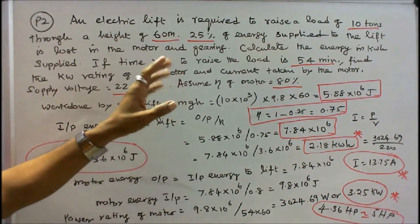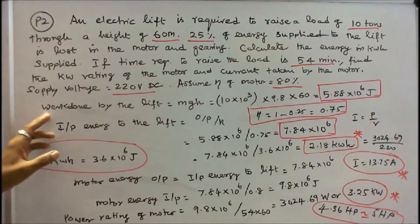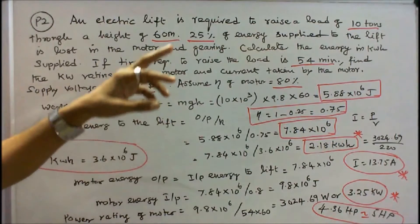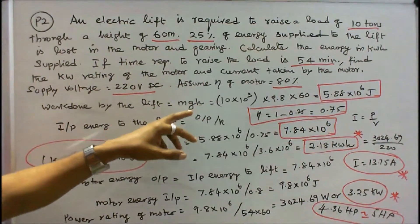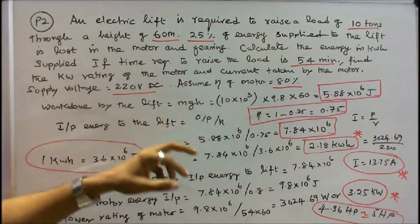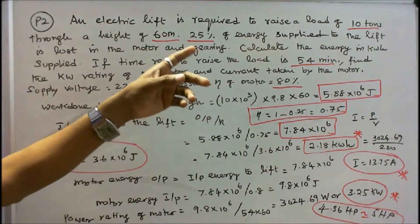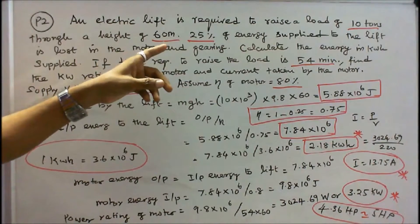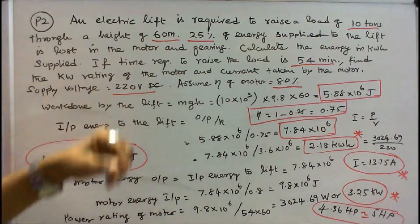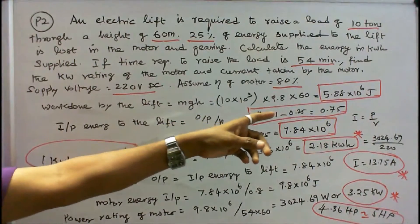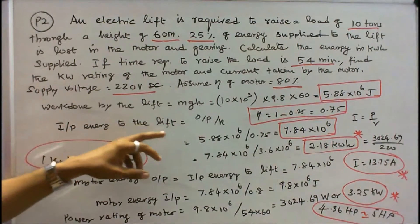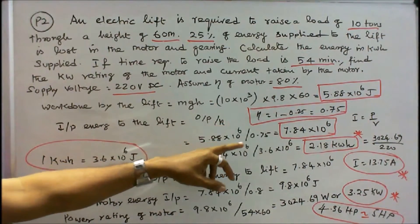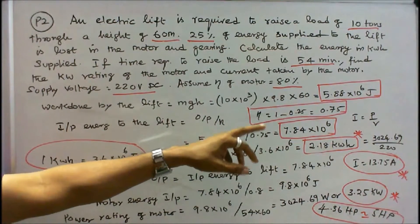Assume efficiency of the motor is equal to 80%. Work done by the lift is equal to M into G into H, where M is 10,000 kg, G is 9.8, H is 60, that is equal to 5.88 into 10 power 6 joules. Efficiency is 75% because 25% is lost, therefore 1 minus 0.25 equals 0.75. Input energy to the lift is equal to output divided by efficiency: 5.88 into 10 power 6 divided by 0.75, that is equal to 7.84 into 10 power 6 joules.